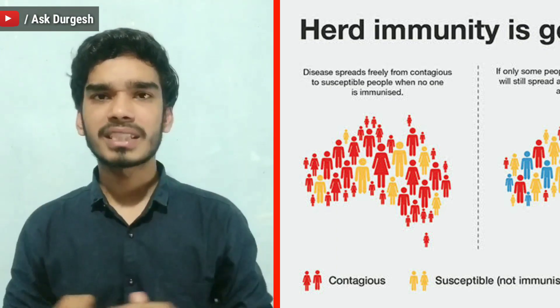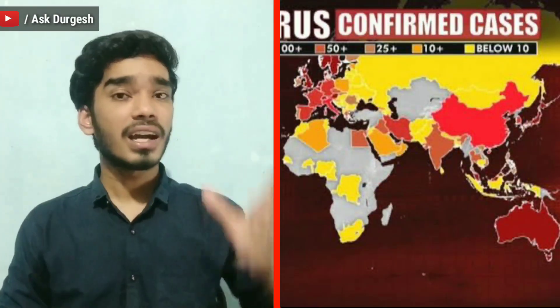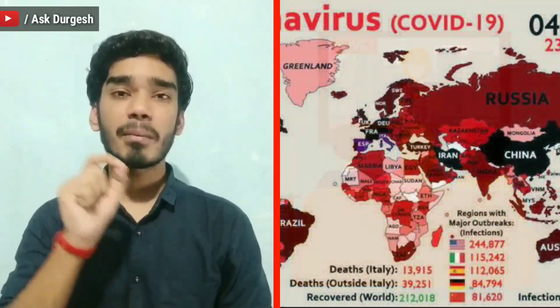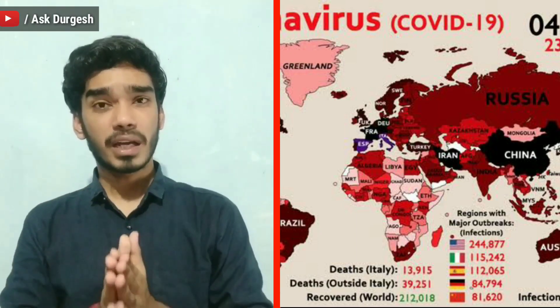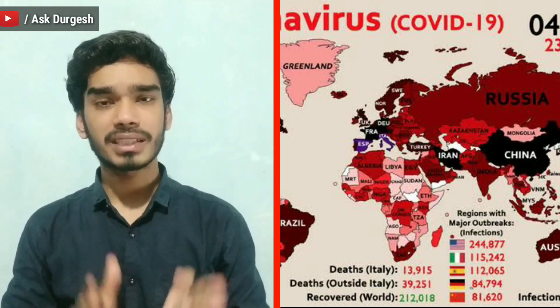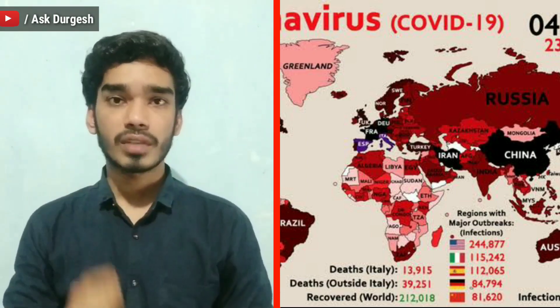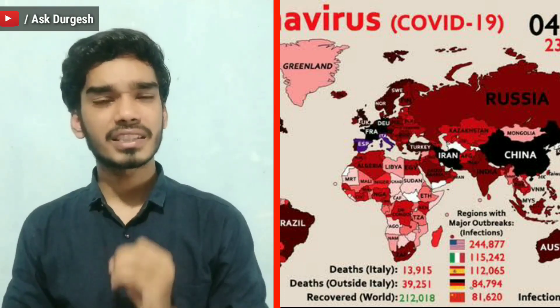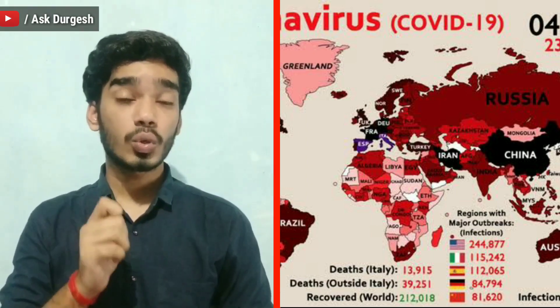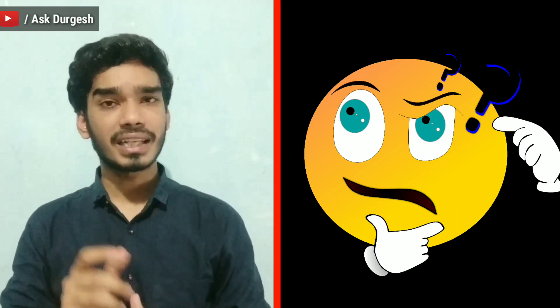News channels show negativity every day — today 10,000 cases, now 9,000 cases, this state has so many deaths — but if you see 1,24,000 people cured, that is not shown enough. India has 130 crore people. You can watch the herd immunity video to understand. The lowest death rate in India is 0.3%, so there is no reason to be paralyzed with fear.